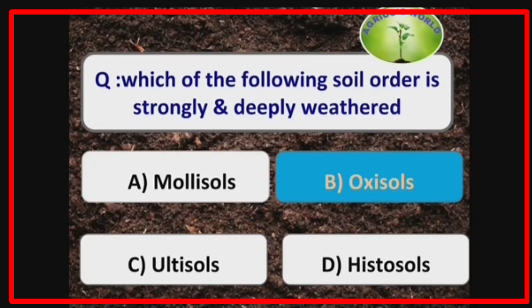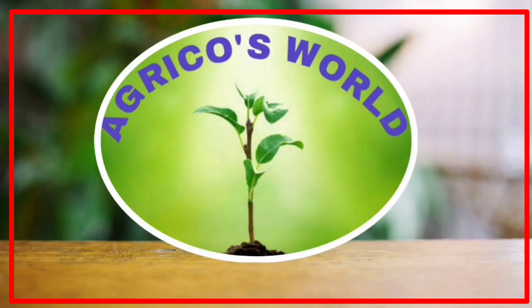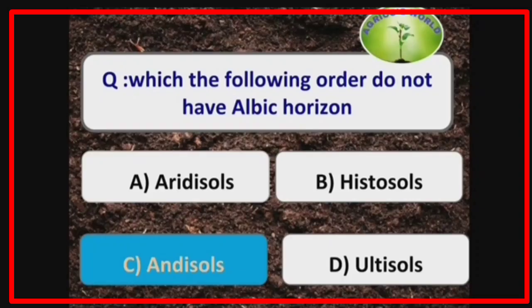Oxisol is the soil order which is strongly and deeply weathered. Ultisols are the order which do not have an albic horizon.